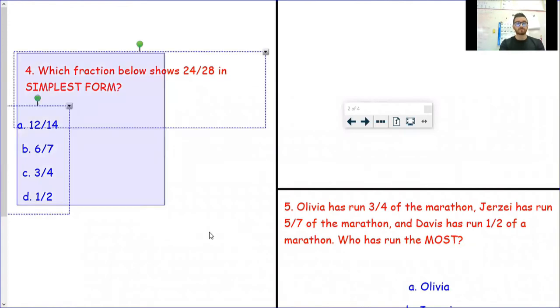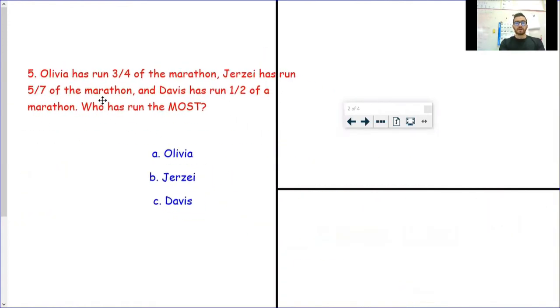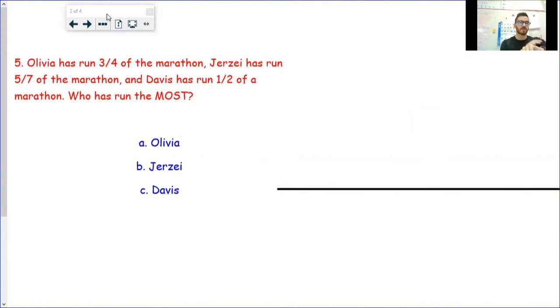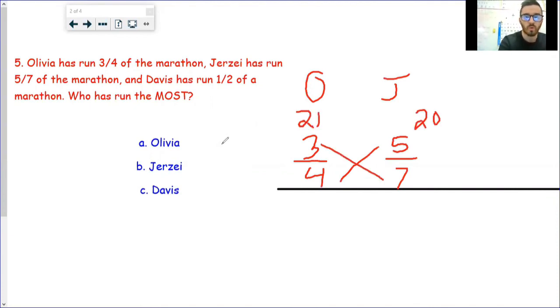Number five, similar to yesterday. Today you're only going to have three answer choices. It says Olivia has run 3/4 of the marathon, Jersey has run 5/7 of the marathon, and Davis has run 1/2 of a marathon. Who has run the most? I think yesterday's question was asking about who walked the least, a little bit different. I don't care who you start with. I started with the first two names that I saw yesterday. I'll do the same today.